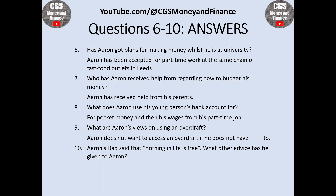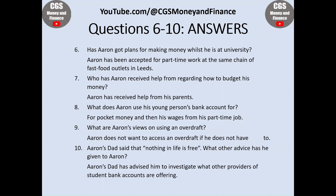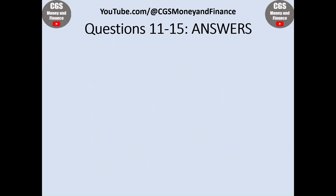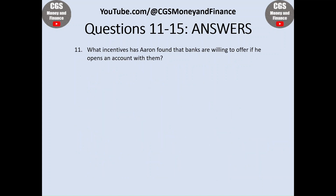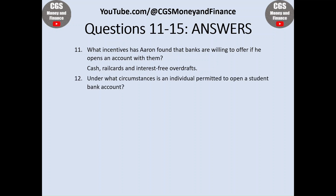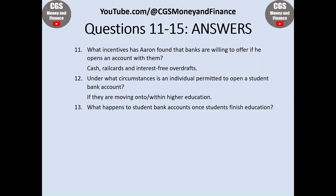Question nine: Aaron does not want to access an overdraft if he does not have to. Question ten: Aaron's dad has advised him to investigate what other providers of student bank accounts are offering. Question eleven: the incentives Aaron found include cash, railcards and interest-free overdrafts. Question twelve: an individual is permitted to open a student bank account if they are moving on to or are within higher education. Question thirteen: the account can become a graduate account once students finish education.